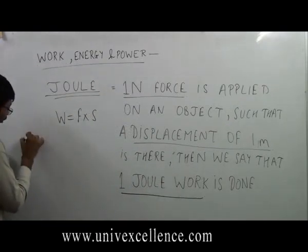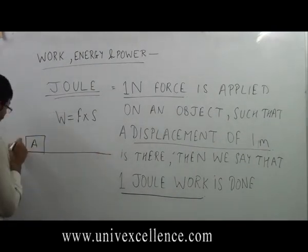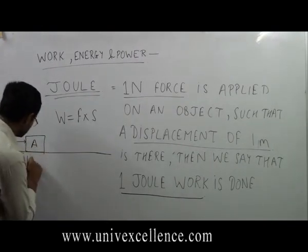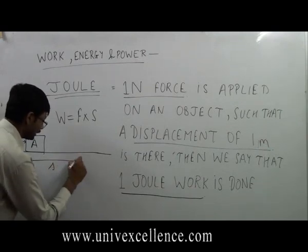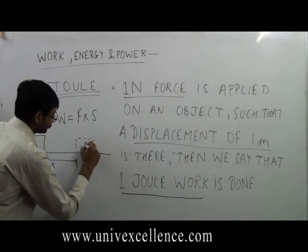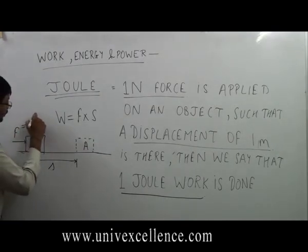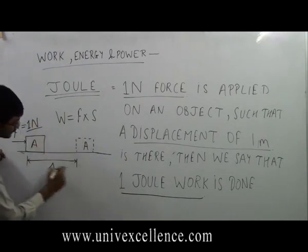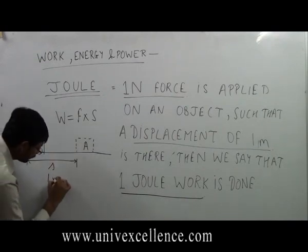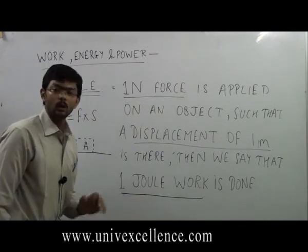Suppose we have an object lying on a surface. We apply force and the object moves, travelling a distance s and coming to a new position. If the magnitude of the force is 1 Newton and the object travels 1 meter, then we say that we have done work equivalent to 1 Joule.